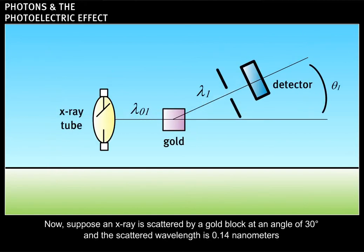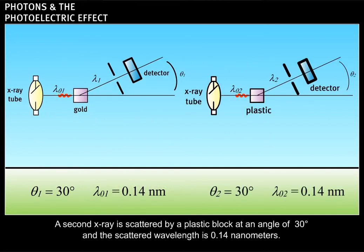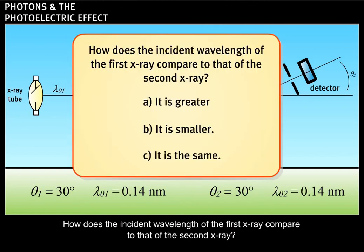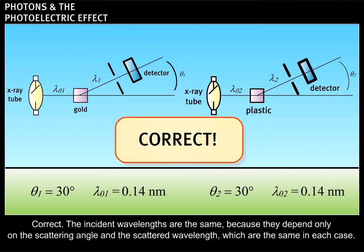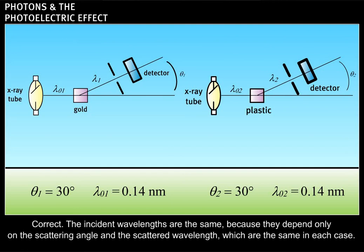Now, suppose an x-ray is scattered by a gold block at an angle of 30 degrees and the scattered wavelength is 0.14 nanometers. A second x-ray is scattered by a plastic block at an angle of 30 degrees and the scattered wavelength is 0.14 nanometers. How does the incident wavelength of the first x-ray compare to that of the second x-ray? Correct. The incident wavelengths are the same because they depend only on the scattering angle and the scattered wavelength, which are the same in each case.